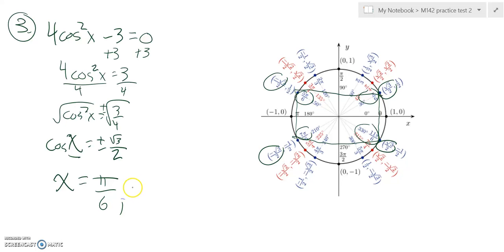So it could be pi over six, five pi over six, seven pi over six, or eleven pi over six.